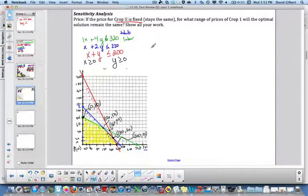All right, so now we're doing the sensitivity analysis. If the price for crop 2 is fixed, and remember our profit function was f of xy or p equals 40x plus 60y, we're saying crop 2 stays the same, so we're still gonna have 60y. Then what will the range of prices on crop 1 still give us our optimal solution, which was this point here? Right, so (180, 20) was our optimal solution.